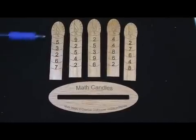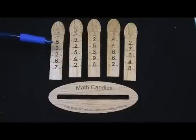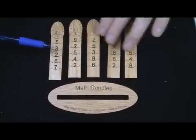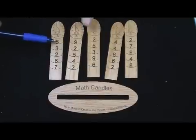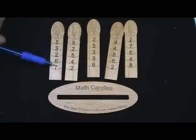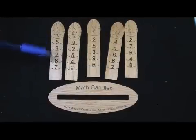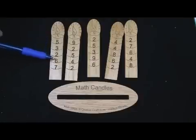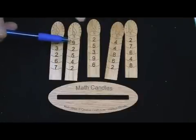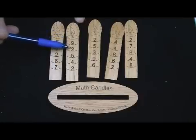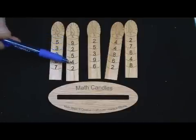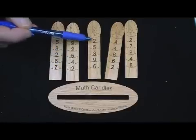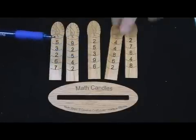You will notice that on any one candle, if I disregard the second row, in this case the three, that every column, every number will add to 20. For example, 5 plus 2 plus 6 plus 7 is 20. Looking at this candle, I'll disregard the second row, and 9 plus 5 plus 4 plus 2 is 20, and so forth. 2 plus 3 plus 6 plus 9 is 20.